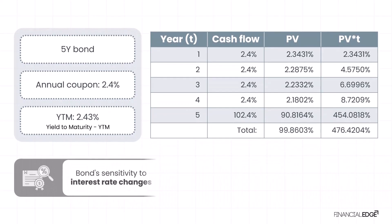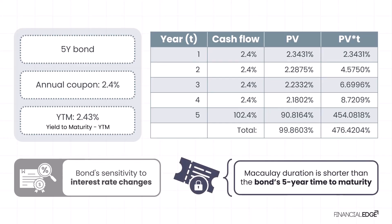This reflects the bond's sensitivity to interest rate changes. The higher the Macaulay duration, the more sensitive the bond's price is to changes in interest rates. Since this is a fixed coupon bond, the Macaulay duration is shorter than the bond's five-year time to maturity, as part of the bondholder's investment is returned before maturity through the annual coupon payments, reducing the average time to receive the bond's cash flows below the time to maturity.